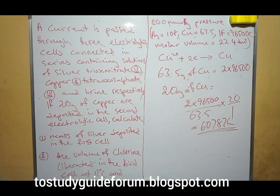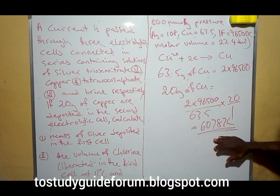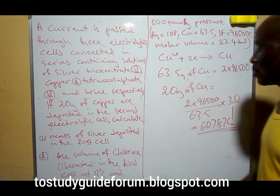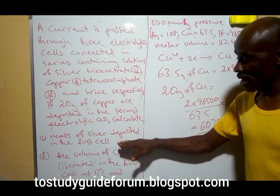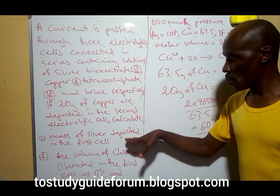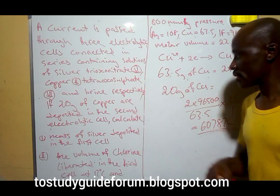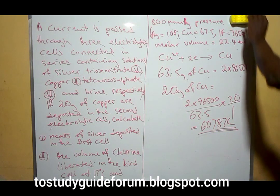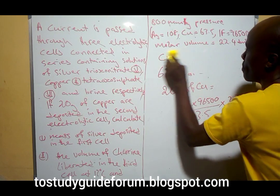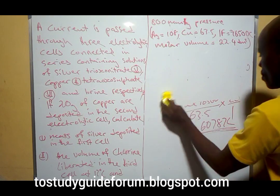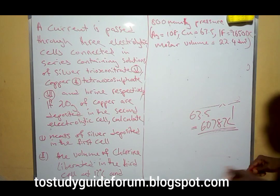By multiplying through, we'll have 60,787 coulombs of electricity. That is the quantity of electricity that we need. With this quantity of electricity, we'll be able to solve the rest of the questions, since the same quantity of electricity passes through all the cells. Let's go down and start with silver.